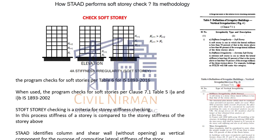When you use the soft story command — 'check soft story' is the text we use in the STAAD editor — the program checks for the soft story as per Table 6 of IS 1893-2016. Soft story checking is the criteria for story stiffness checking, and in this process the stiffness of a particular story is compared with the story stiffness of the floor above. STAAD identifies the columns and shear walls without openings as vertical components for the purpose of computing the lateral stiffness of the story.